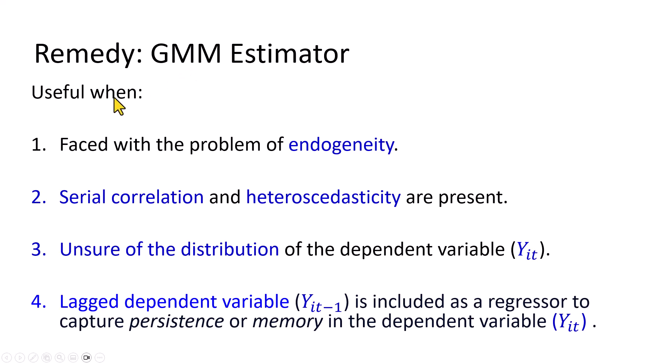The GMM estimator serves as a remedy, and it's useful when we are faced with a problem of endogeneity, and also when we have non-spherical disturbance problems of serial correlation and heteroskedasticity, in addition to cases when we are unsure of the distribution of the dependent variable, and when the lag-dependent variable is included as a regressor.